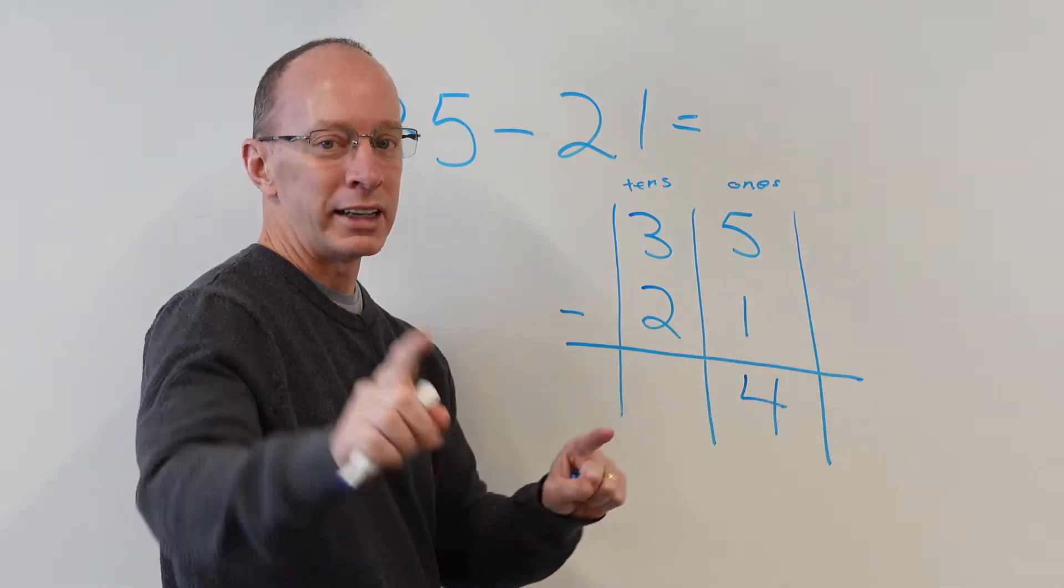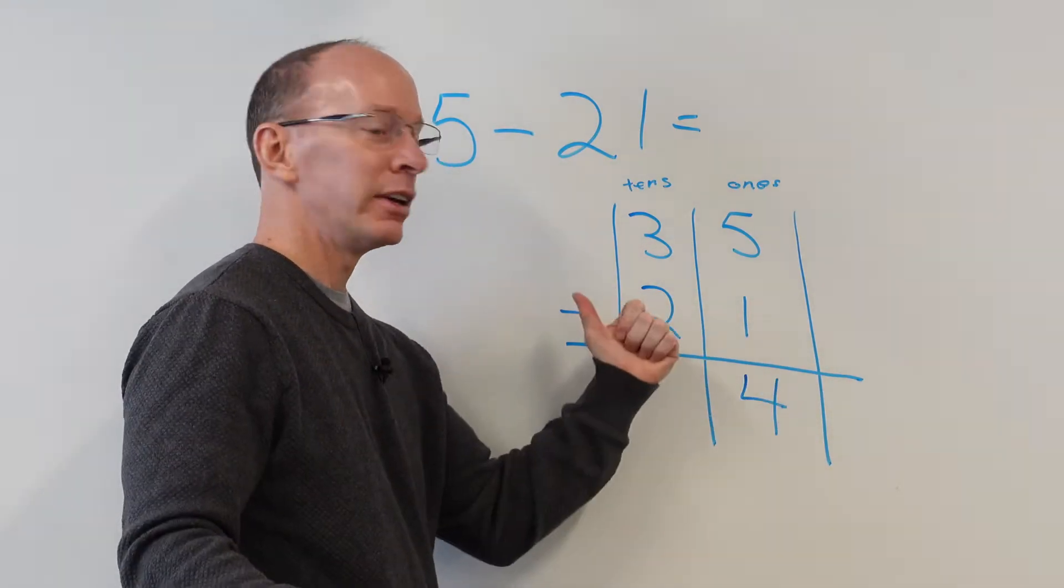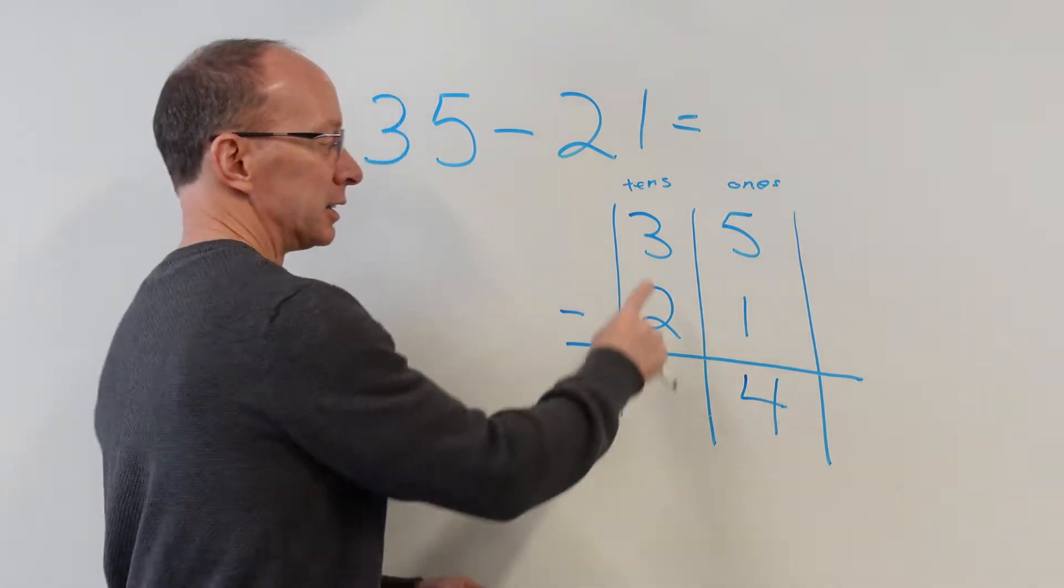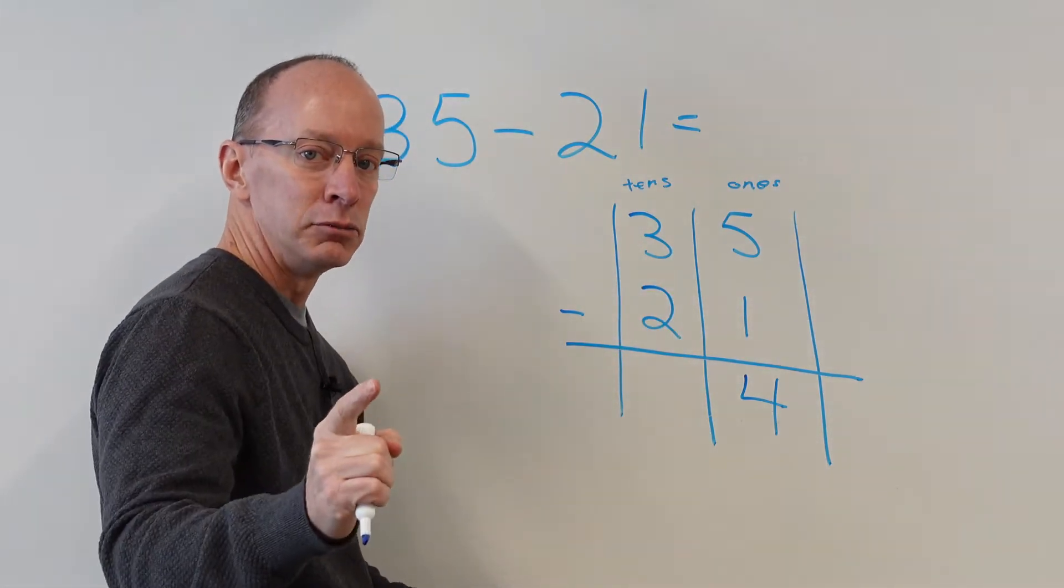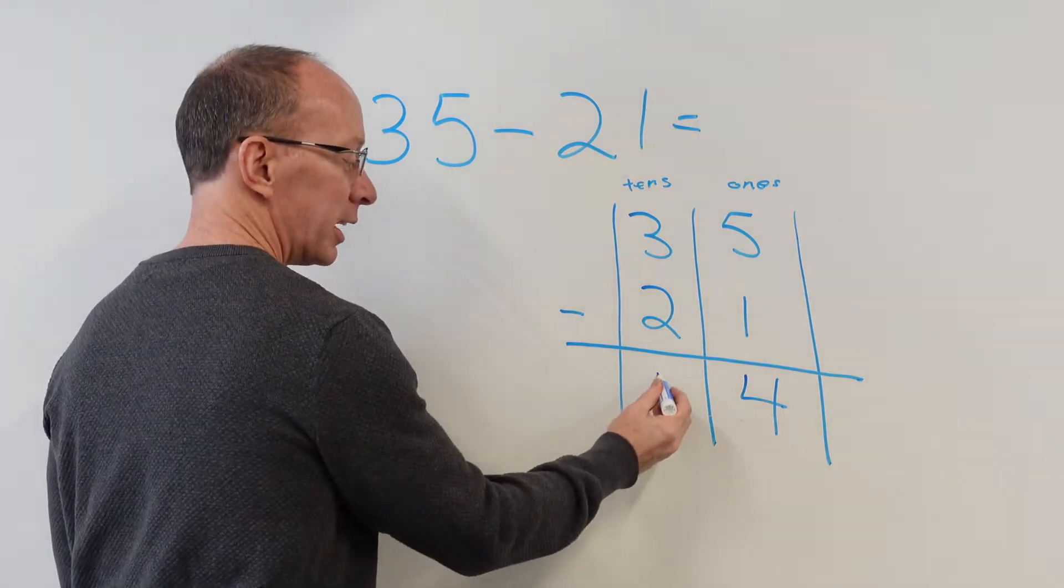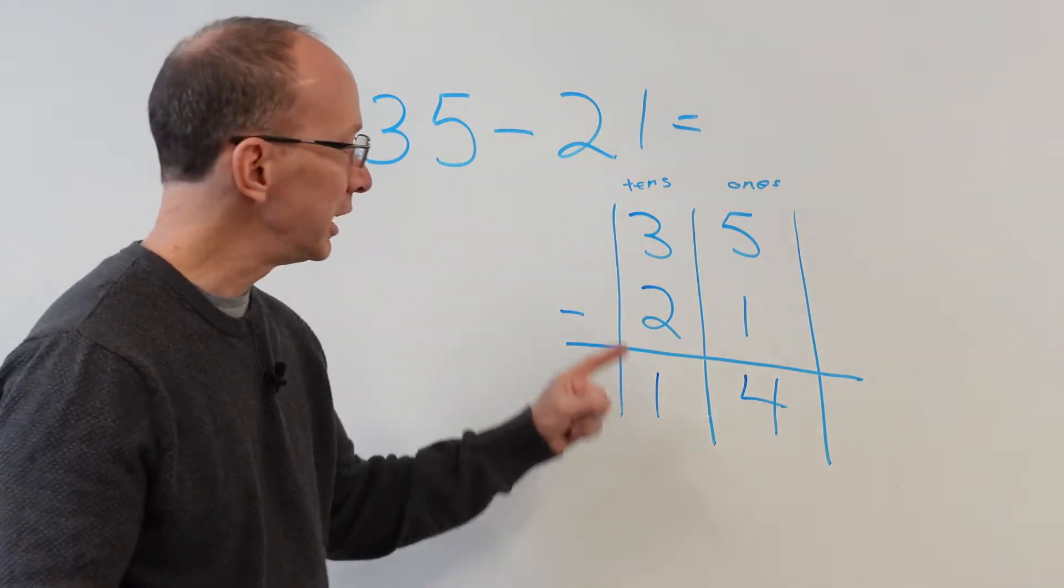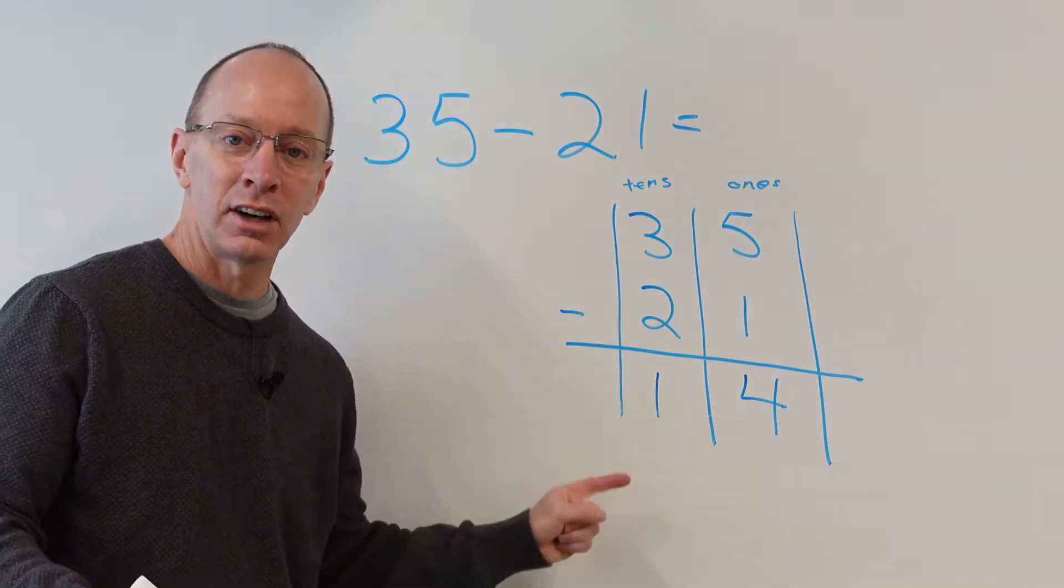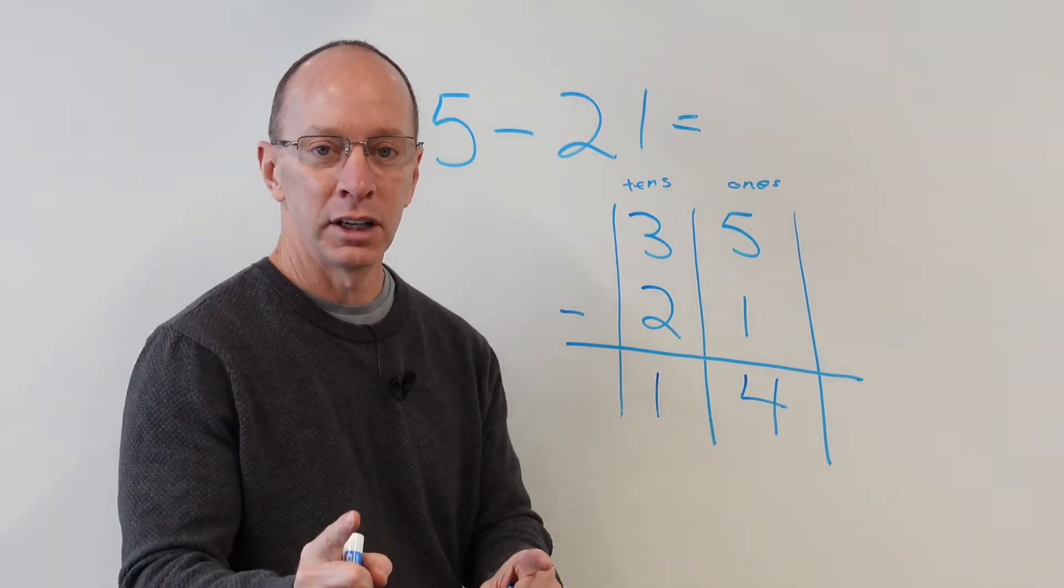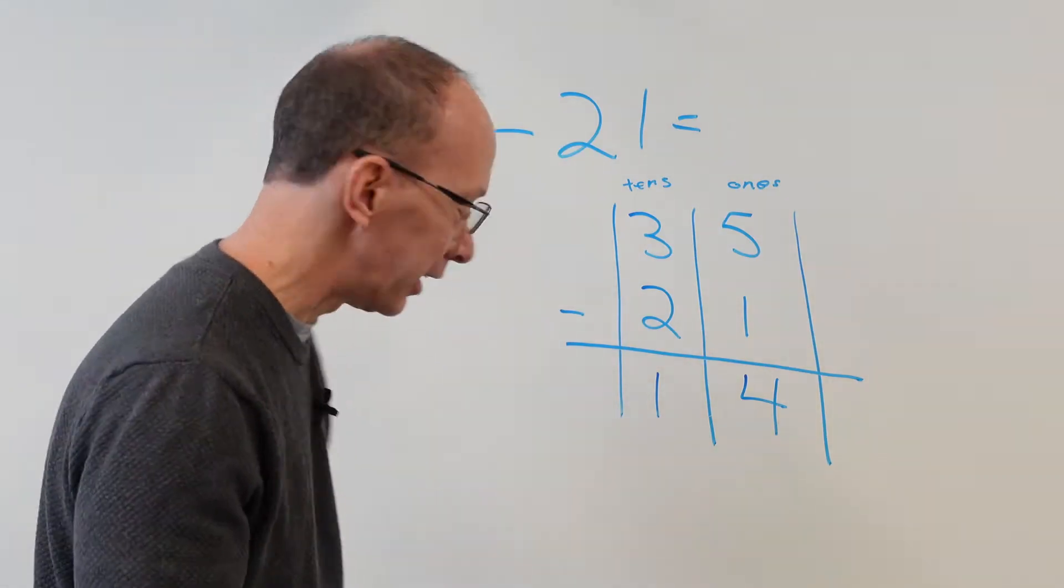So let's go on over. We didn't have to do step two, so now we do step three and subtract the tens. Three minus two. Do you know what it is? Yeah, one. You guys are awesome this morning. Fourteen. Thirty-five minus 21 is 14. The sum is 14. Ready to do another one? Yeah, I know you guys are. Let's do it.